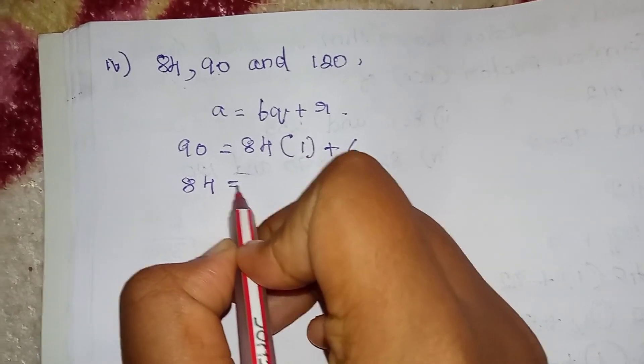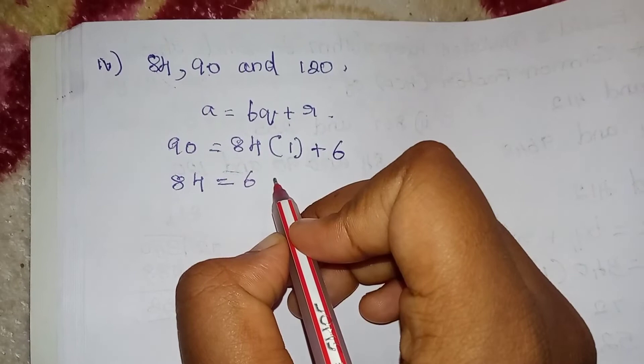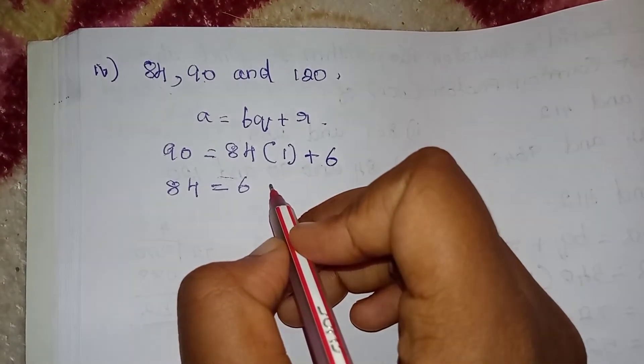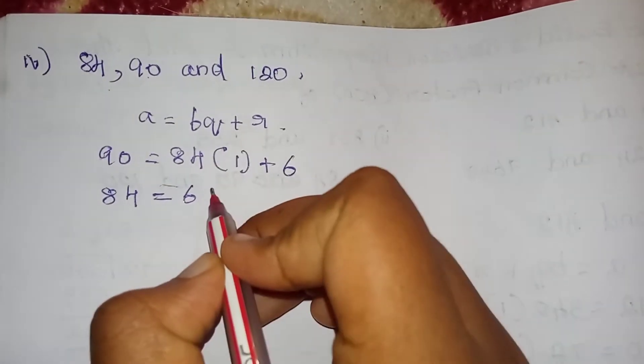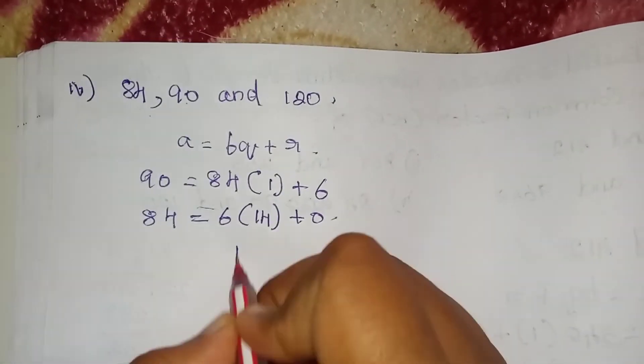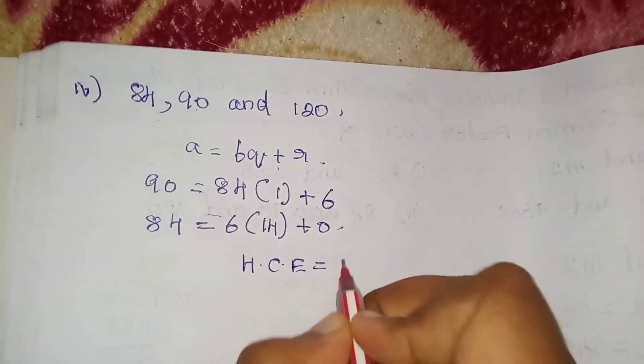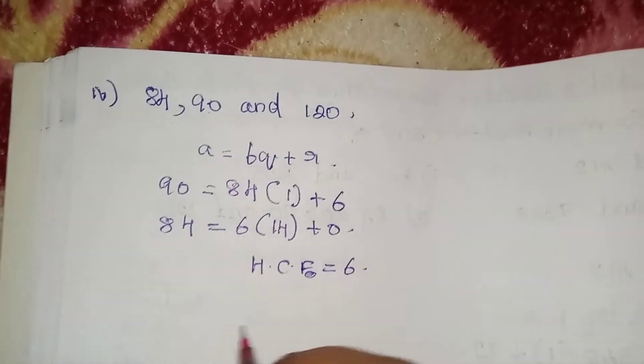84 is equal to 6 times 14, remainder is 0. The HCF is equal to 6.